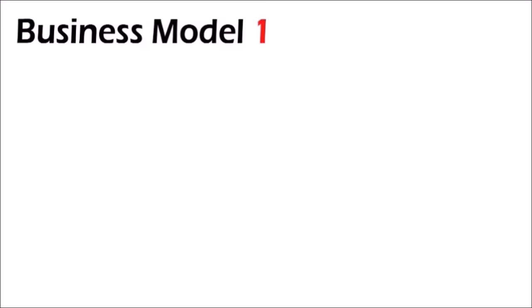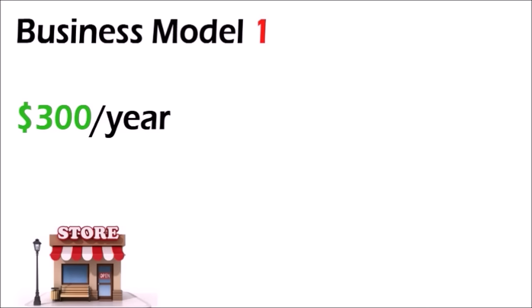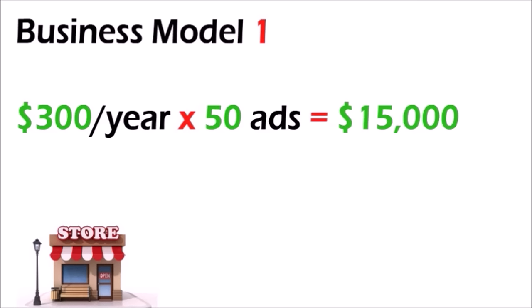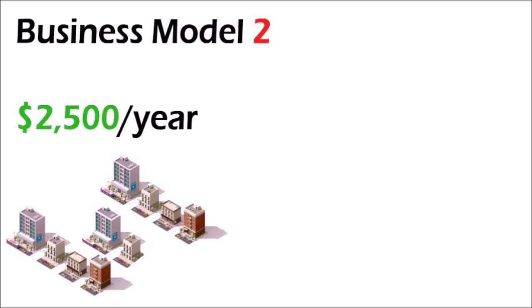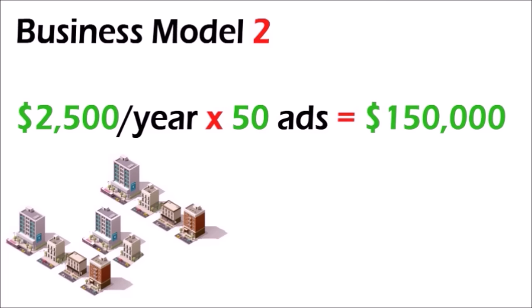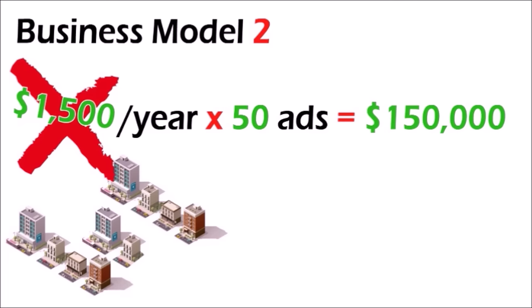Business Model 1: Let's say you charge $300 per year for one location and you sell 50 ads per location. Your net income would be 50 ads times $300 per ad, equals $15,000 per screen location, multiplied by 10 locations, equals $150,000 per year in revenue. Business Model 2: If you charge $2,500 for all 10 locations, then 50 ads multiplied by $2,500 per ad would also yield $150,000 per year in revenue. Even if you only charge $1,500 per year for all 10 locations, multiplied by 50 ads, that generates a $75,000 yearly income.